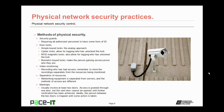Finally, in highly secure environments, a man trap may be implemented. A man trap usually involves at least two doors — access is granted through one door, but the next door cannot be opened until further verification has been achieved. The person between the doors cannot go back out the other door, meaning they are trapped until some action or verification takes place.